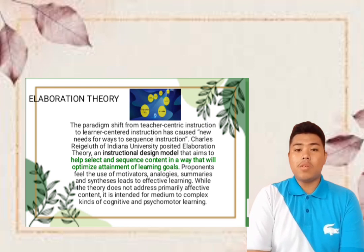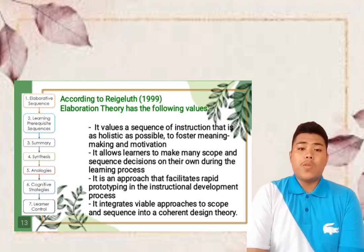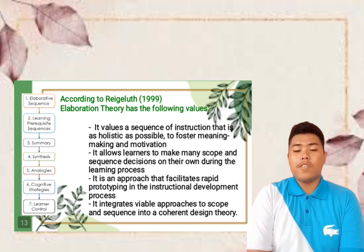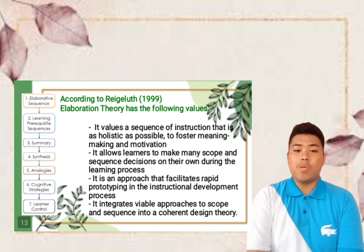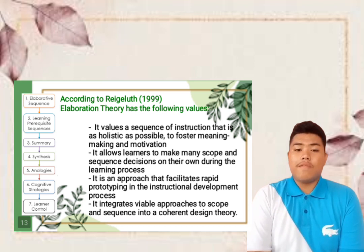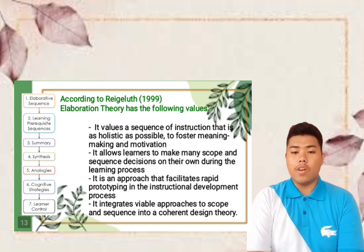Proponents feel the use of motivators, analogies, summary, and synthesis leads to effective learning. While the theory does not address primarily affective content, it is intended for medium to complex kinds of cognitive and psychomotor learning. According to Reigeluth, the Elaboration Theory values a sequence of instruction that is as holistic as possible to foster meaning-making and motivation. His theory allows learners to make many scope and sequence decisions on their own during the learning process, facilitates rapid prototyping in the instructional development process, and integrates viable approaches to scope and sequence into a coherent design theory.